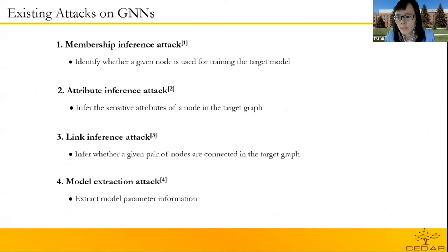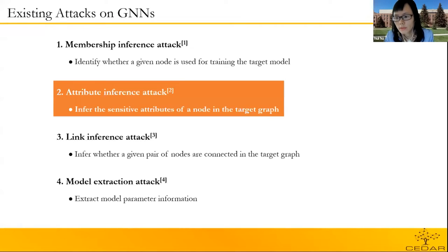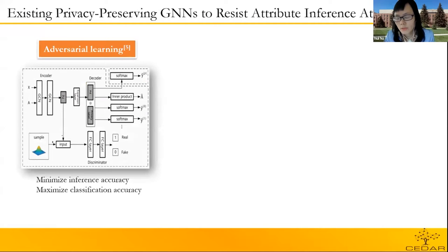Depending on the goal of the attacker, existing attacks on GNNs include the following four types. In this work, we focus on attribute inference attack. Namely, the attacker attempts to infer the sensitive attributes of a node in the targeted graph. To resist the attribute inference attack, three directions have been proposed. First, adversarial learning. The basic idea of adversarial learning is minimizing inference accuracy and maximizing classification accuracy simultaneously in the node representation learning process.